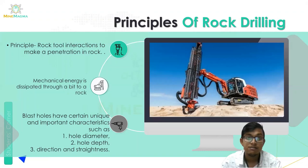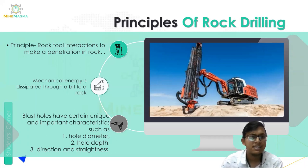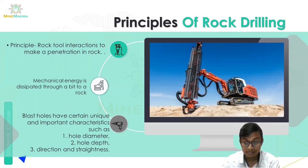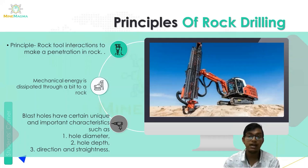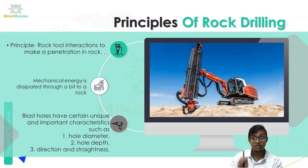Now let's go to the principle of rock drilling. The basic principle is rock-tool interaction to make a penetration in the rock, where mechanical energy is dissipated through a bit to the rock. As an analogy, if you want to make a hole in a wall you need a nail and a hammer — the same concept applies here. A rock tool interaction creates penetration, and mechanical energy is applied through a bit to penetrate the rock.